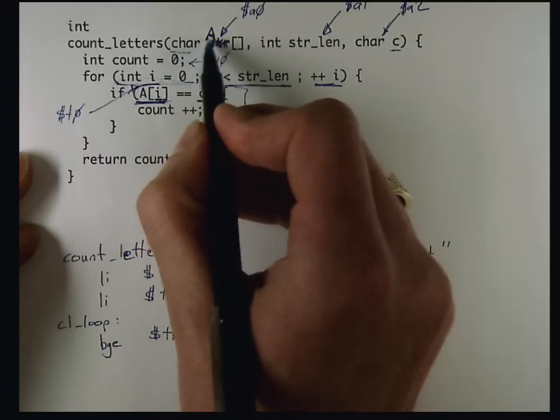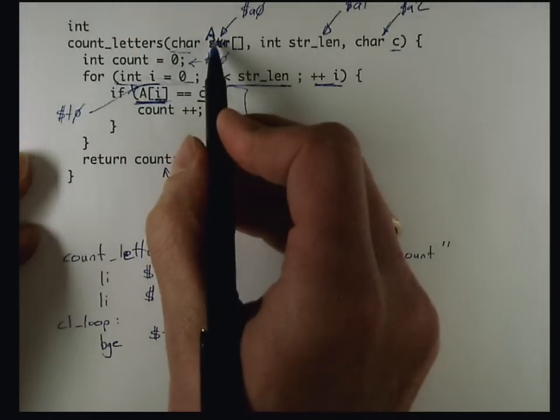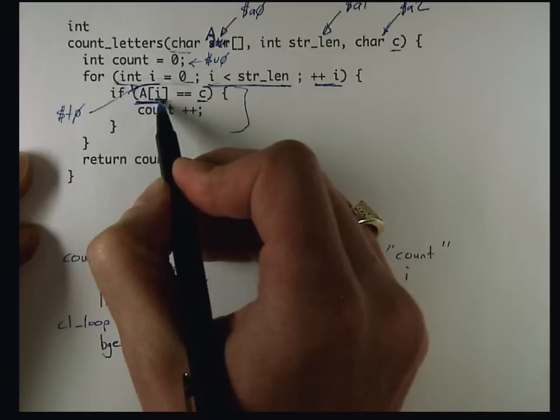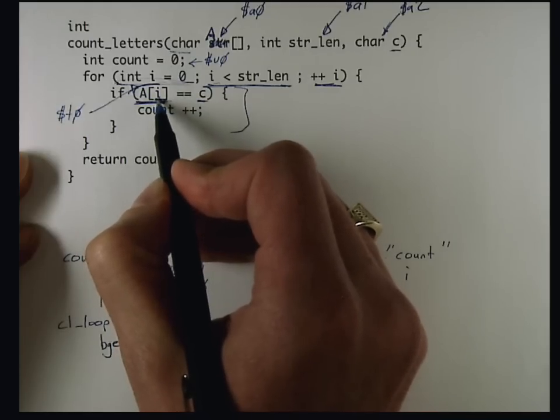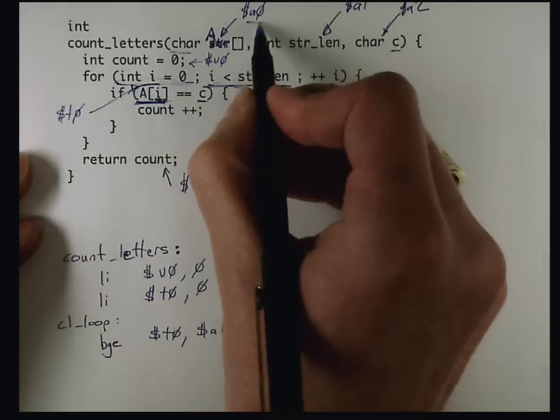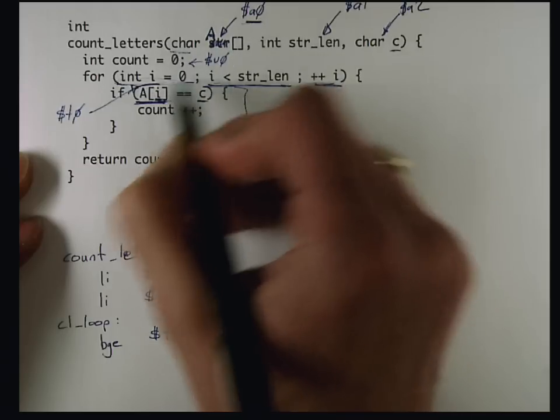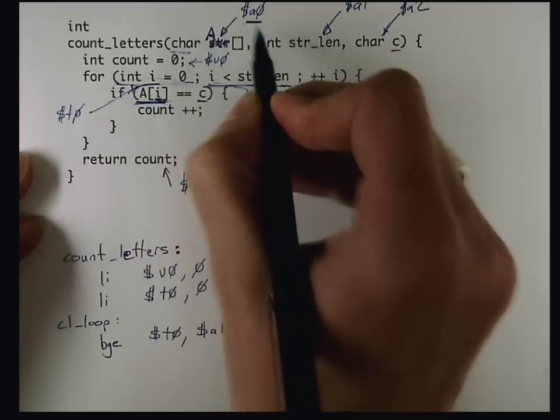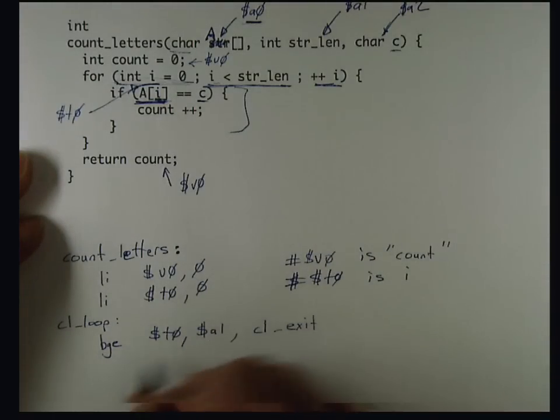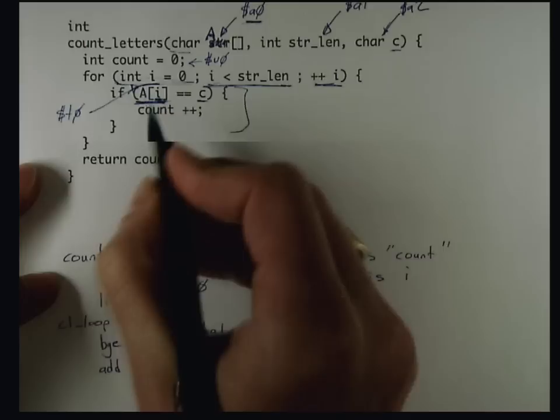It turns out that's an array of characters. Each character is a single byte big, so I don't actually have to scale I at all. I can find the location of the I-th character, generate the address of the I-th character, by just adding I to the pointer at the beginning of the array. The value in A0 is effectively a pointer to the beginning of the array of characters, and to get to the I-th character, I have to add I to that.